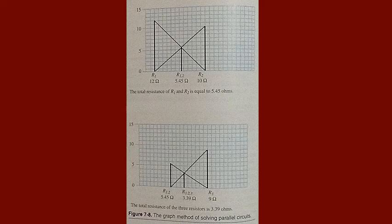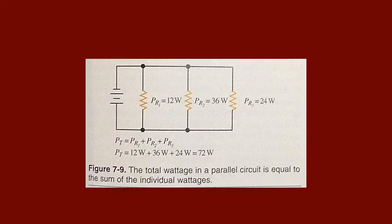Power in a parallel circuit: the total power consumed equals the sum of all individual powers. In figure 7-9, the total power consumed is 72 watts, equal to the sum of R1 at 12 watts, R2 at 32 watts, and R3 at 24 watts.